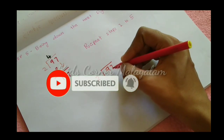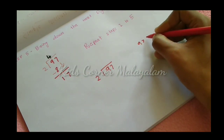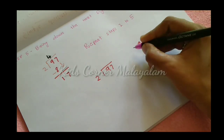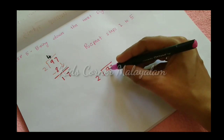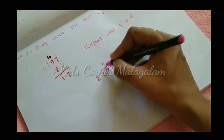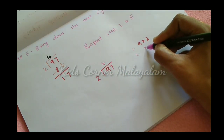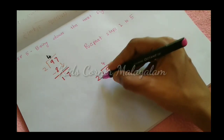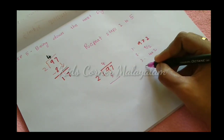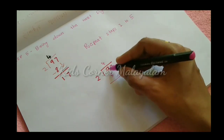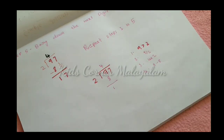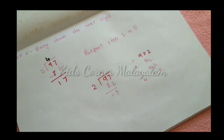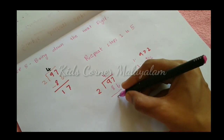For problem number 15, first we compare: 9 is greater than 2 — yes, that's good. Step 1 compare, Step 2 divide: 9 divided by 2 is 4. Step 3 multiply: 4 times 2 is 8. Step 4 subtract: 9 minus 8 is 1. Step 5: bring down the next digit, which is 7. Now we repeat the steps with 17.